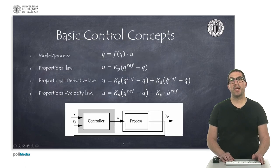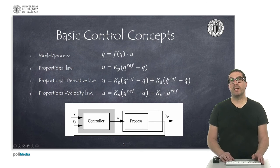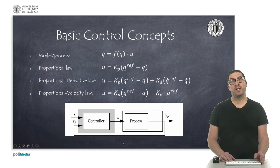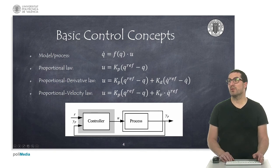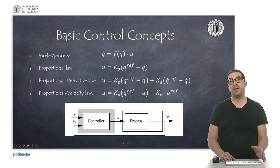I will explain some very basic concepts on feedback control systems in its most simplified version. In a classic control loop, we find on the one hand the system to be controlled — sometimes known as a model or process depending on the context — and on the other hand, a controller whose objective is to minimize the error between a reference or setpoint and the measured output.